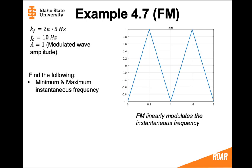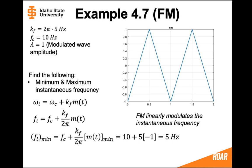First, let's find the minimum and maximum instantaneous frequency. The instantaneous frequency is the carrier frequency plus the constant kf times the message. In frequency modulation, we modulate the instantaneous frequency linearly. To express this in linear frequency instead of angular frequency, we divide by 2 pi. For the minimum, we substitute in the minimum value of the message, which is minus 1, giving a minimum instantaneous frequency of 5 hertz.